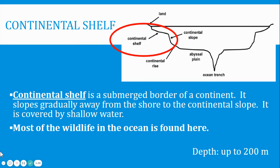The continental shelf slopes gradually away from the shore to the continental slope and is covered by shallow water. Most of the wildlife in the ocean is found here in the continental shelf. The depth is up to 200 meters.